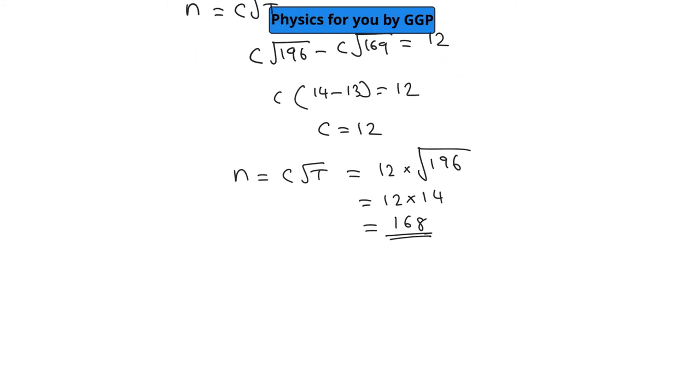The higher frequency is 168 Hz. The frequency of the tuning fork should be 168 - 6 = 162 Hz, because it produces a beat frequency of 6 with respect to it.